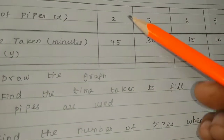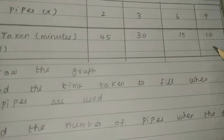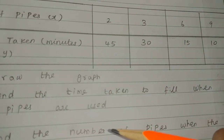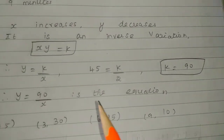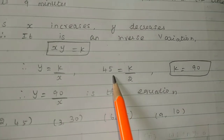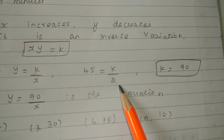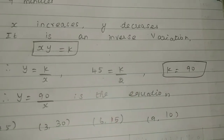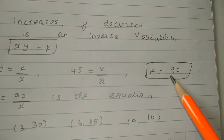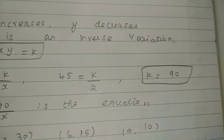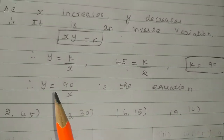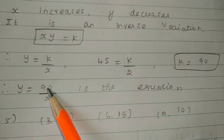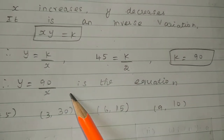So what values are the first values? Y is equal to K by X, so K is equal to X times Y. We find K equals 90. So the equation is Y is equal to 90 by X.